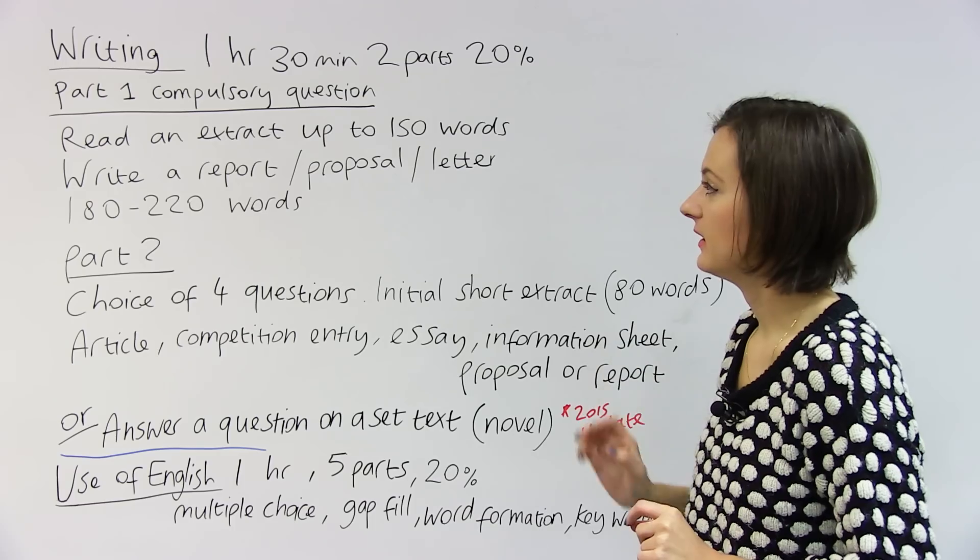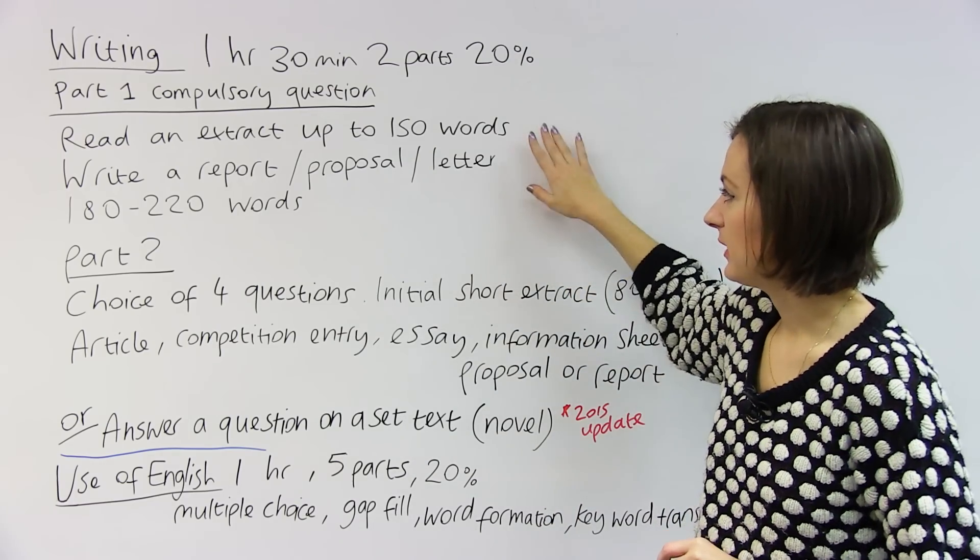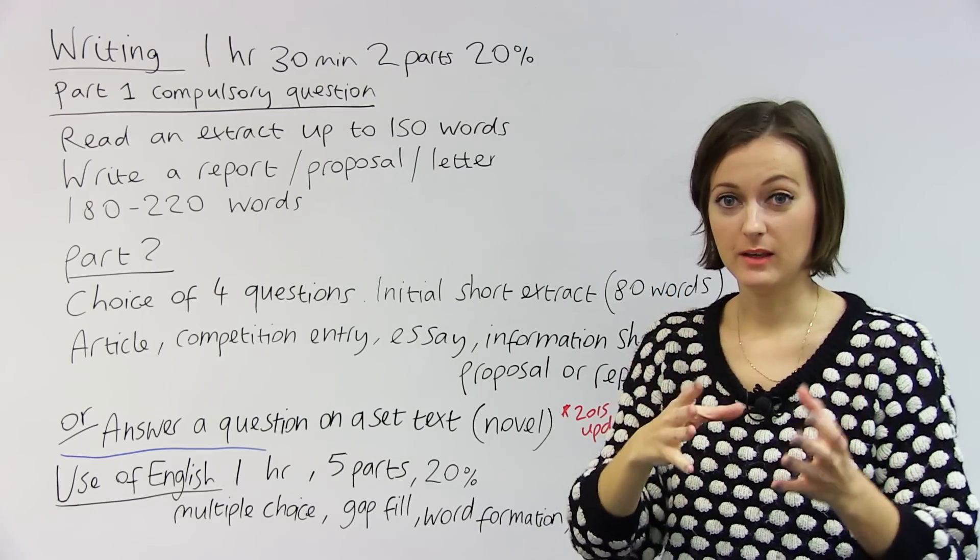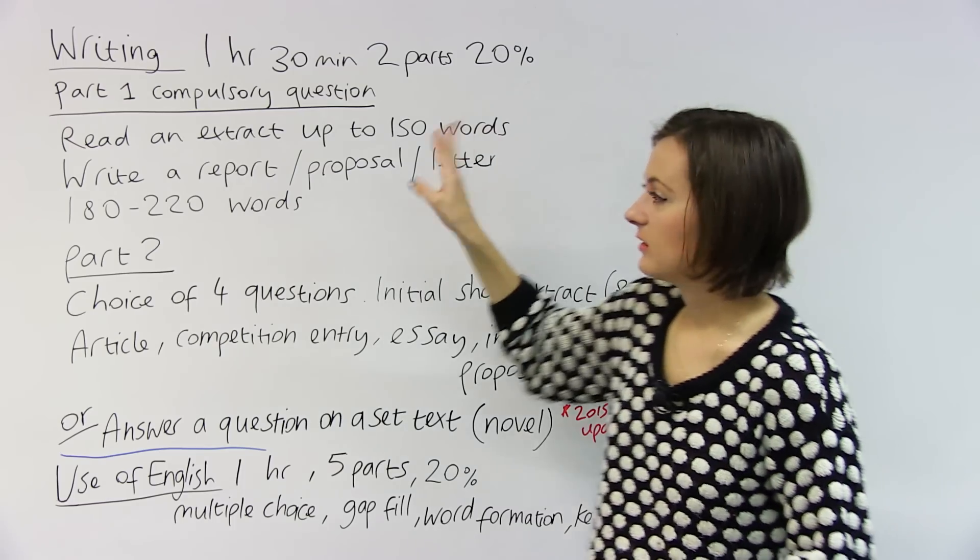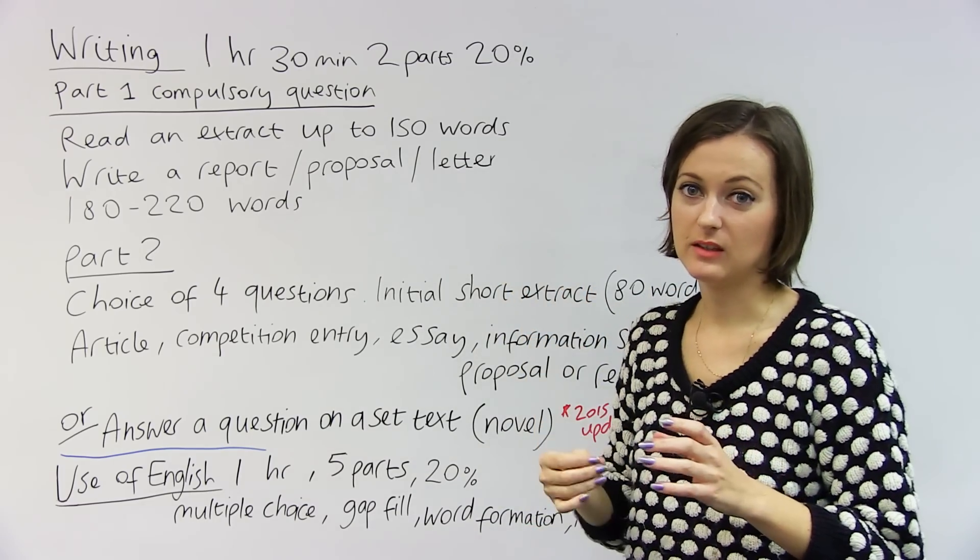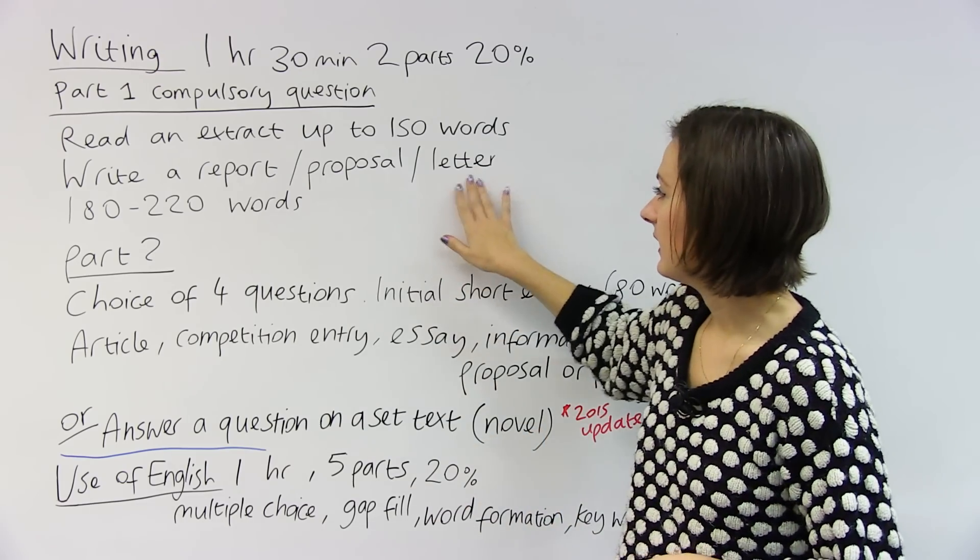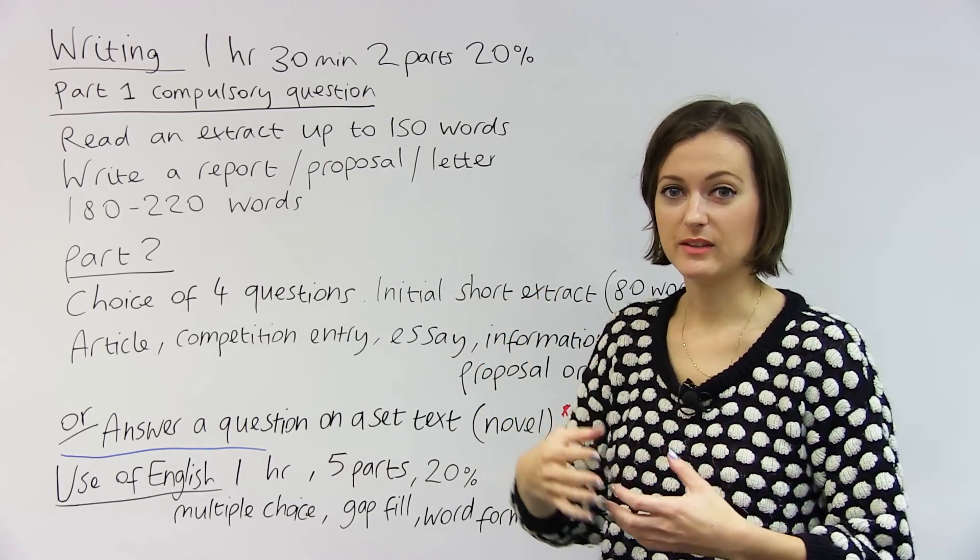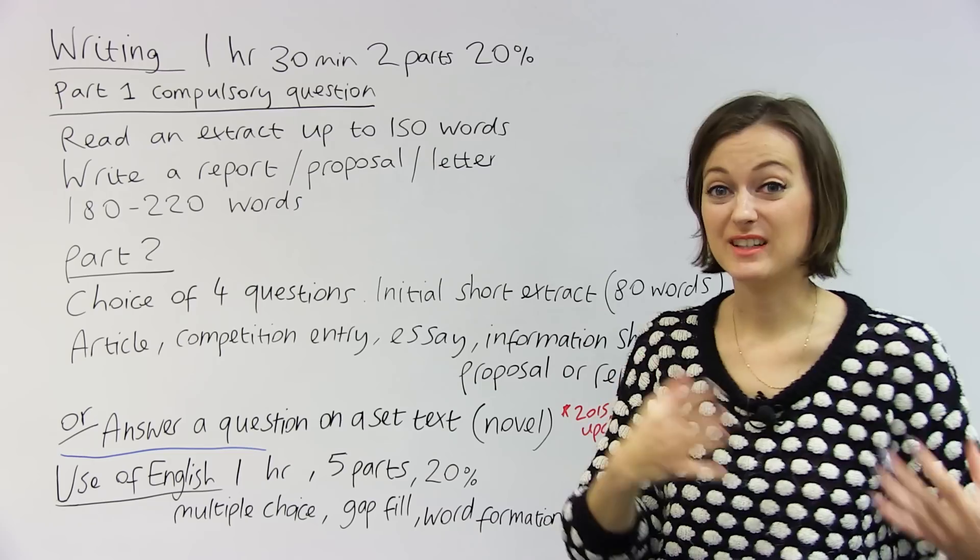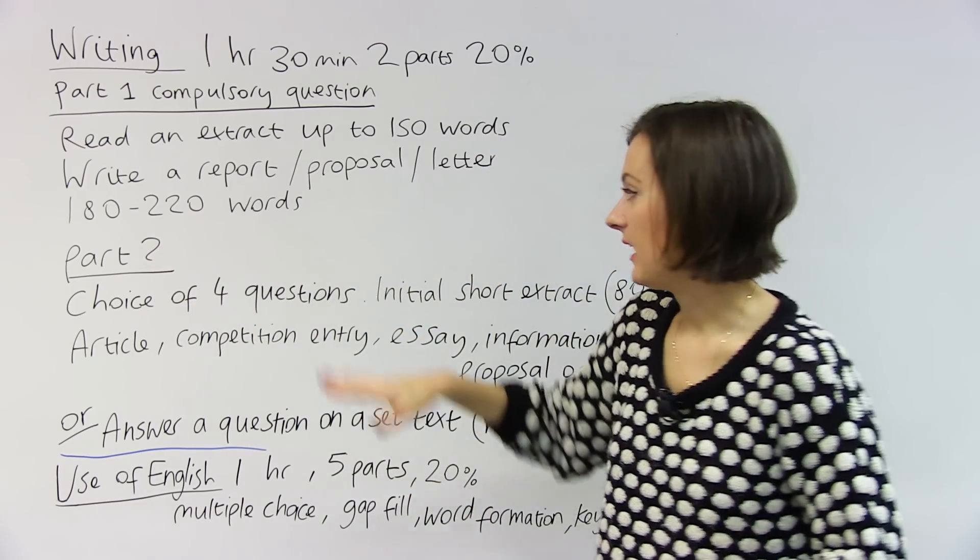Now, what you need to do in the writing test is question one is compulsory. That means you have to answer it. You don't have a choice. First of all, you need to read an extract, a short text up to 150 words that you need to read before you write your own answer. And you'll be expected to write a report, a proposal, or a letter. So it's a variety of different texts. And for each of those, you'll need to use the appropriate vocabulary, so formal language or informal language, and the right kind of style. Because a report has a different tone and different conventions to writing a letter, for example. So you need to prepare and do writing practice on these different areas before you're ready to take the test. And your answer for this part will need to be between 180 and 220 words.